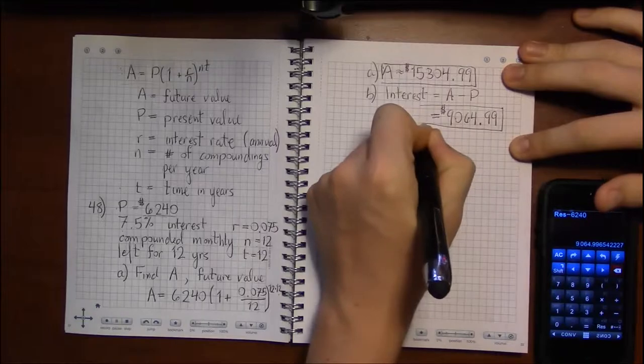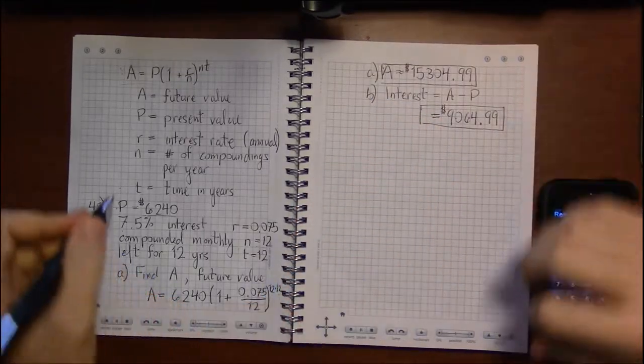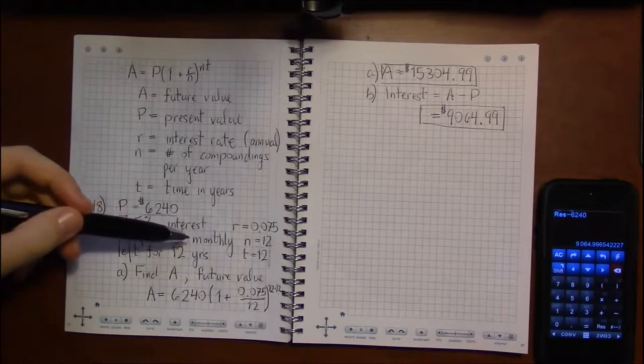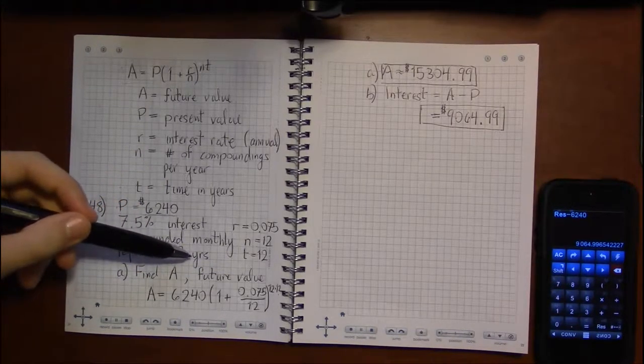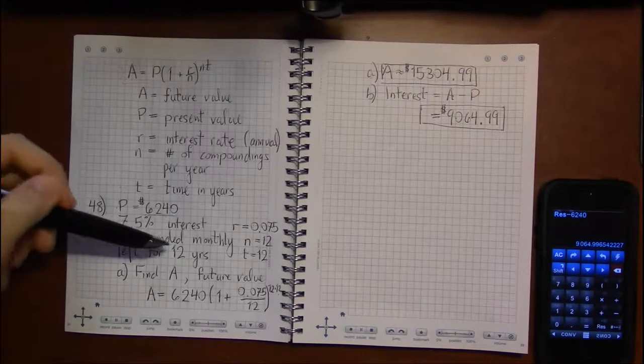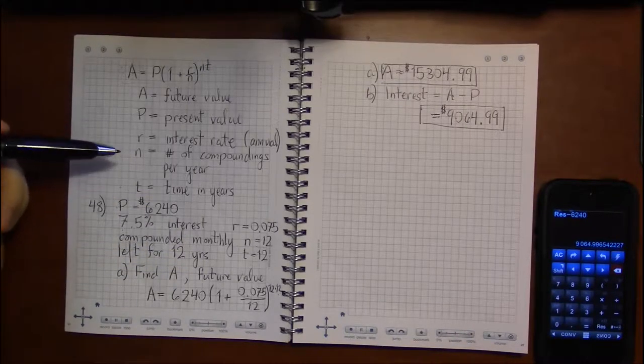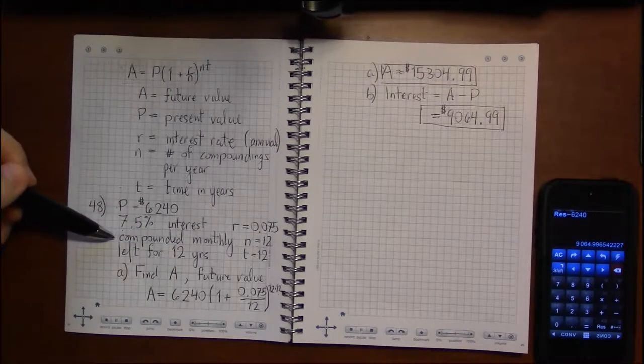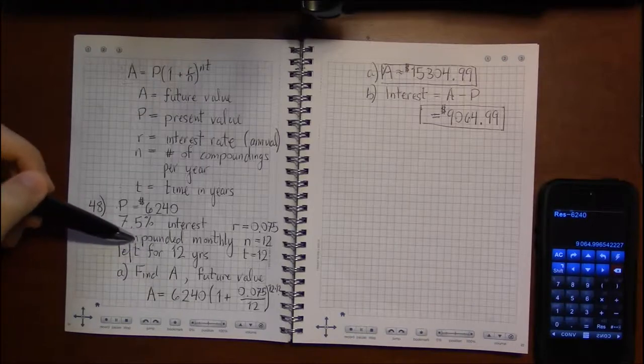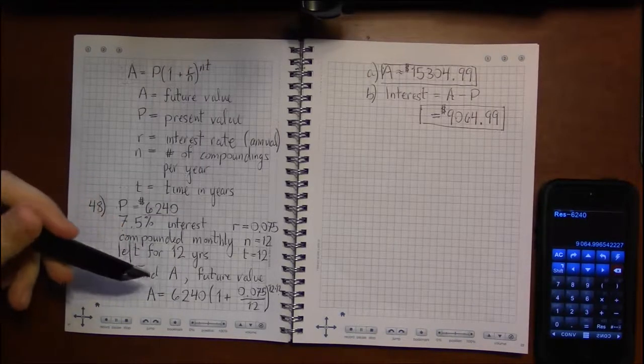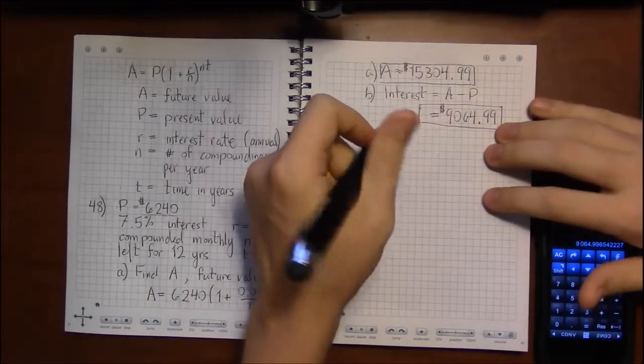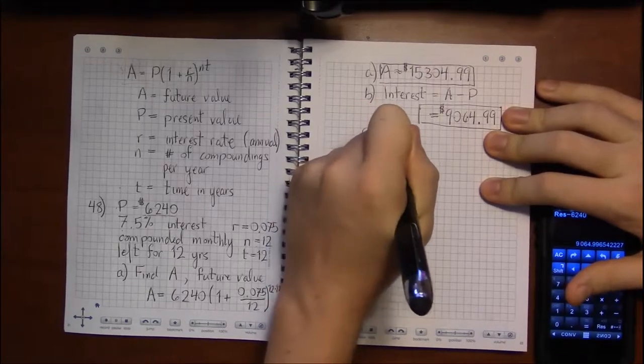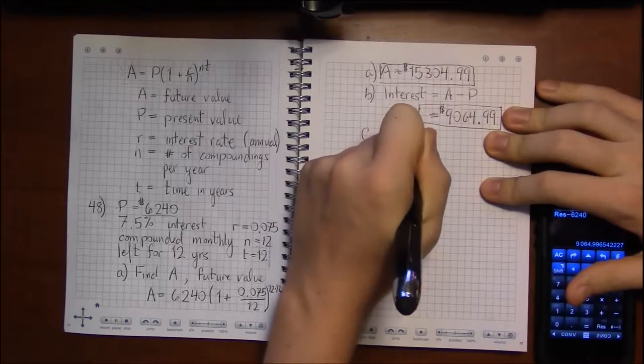The thing is, though, is that as you increase the number of compoundings, if you did it not just monthly but then daily, but you could then up it to make it compounding every hour, then another bank could offer you compounding every minute, and yet a third bank could offer compounding every second, and you can get faster and faster and faster. And it turns out that there's a limit to this whole process, and it's called continuously compounded interest.